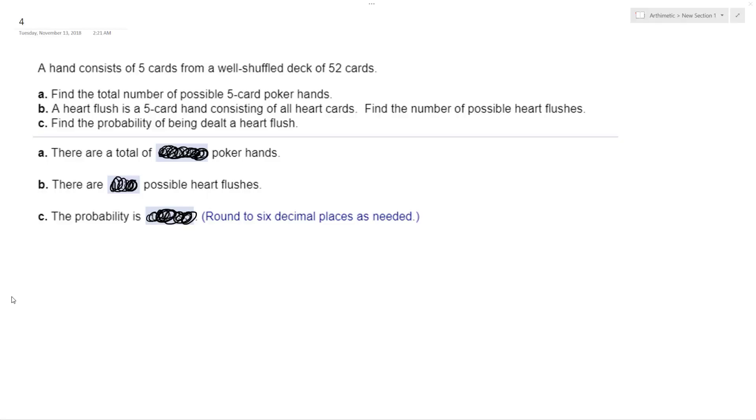All right, so we got a bunch of card problems here. Find the total number of possible five-card poker hands. That's going to be a lot. This is combinatorics. There are 52 total cards in a deck, they're all unique, and there's five cards per hand. That means any five unique cards per hand, but it doesn't matter what order they're in.